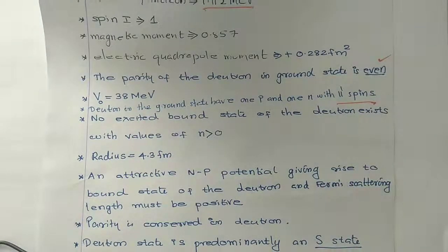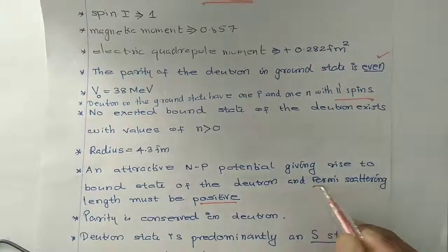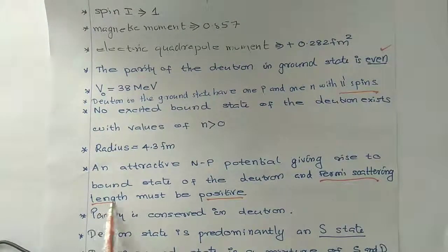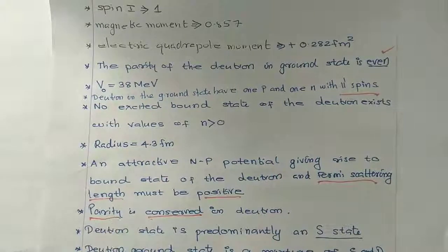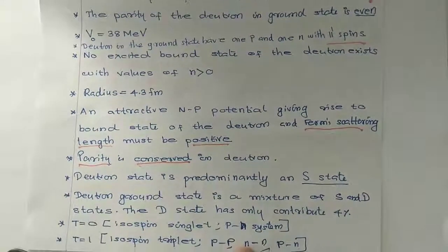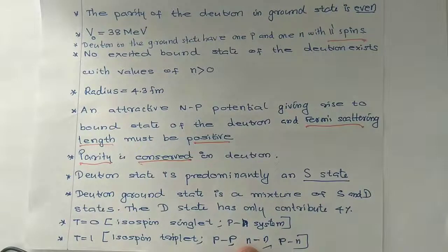No excited bound state of the deutron exists with values of n greater than zero. The radius is 4.35 meters. An attractive NP potential giving rise to a bound state of the deutron, and the Fermi scattering length must be positive. Here is the explanation of the deutron.